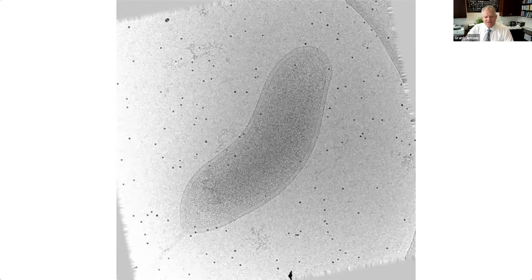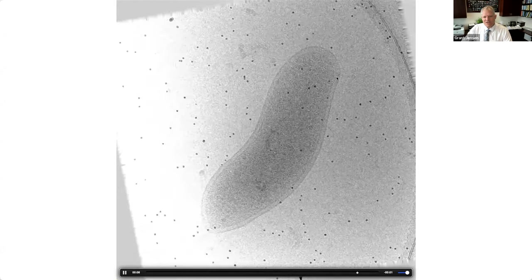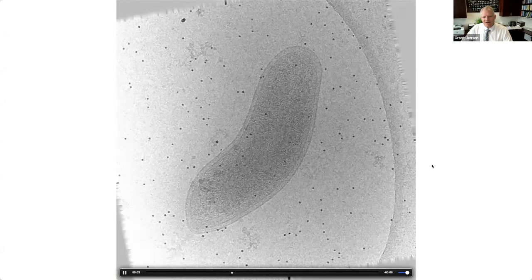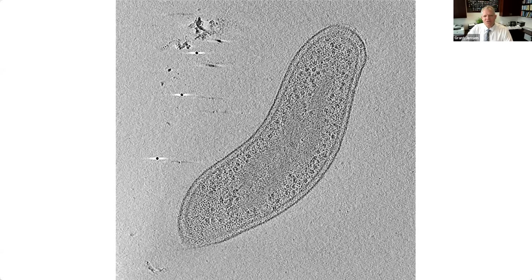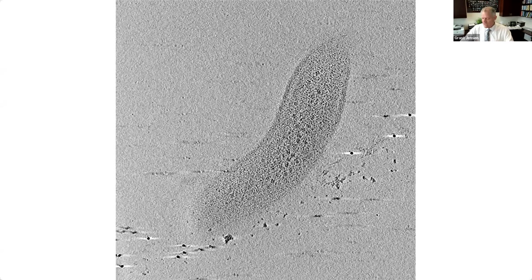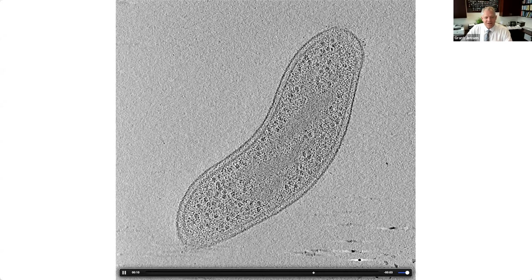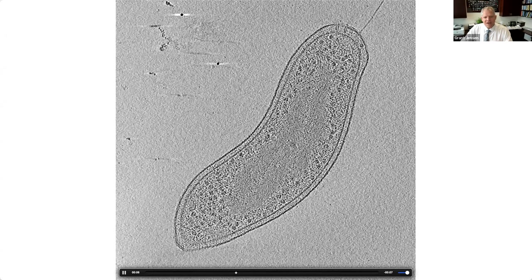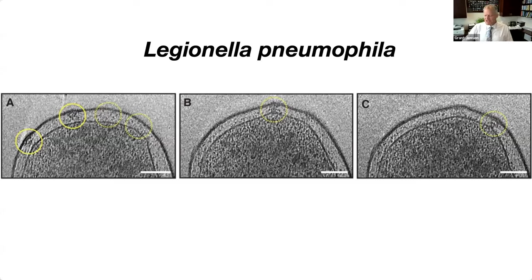Electron cryotomography of cells: the raw data looks like this - a tilt series of one particular bacterial cell. From that tilt series we can calculate a three-dimensional reconstruction of all the contents of the cell, going through slice by slice from the bottom up to the front, allowing you to see many of the macromolecular structures inside. If you do this on Legionella pneumophila - a bacterial species that causes Legionnaire's disease - you see macromolecular machines existing between the inner and the outer membrane.